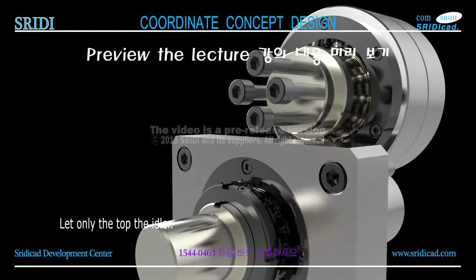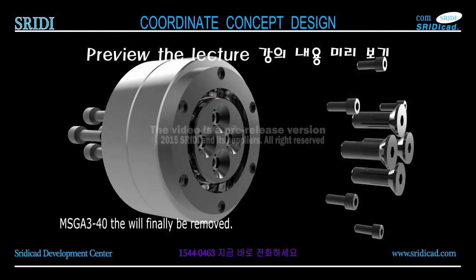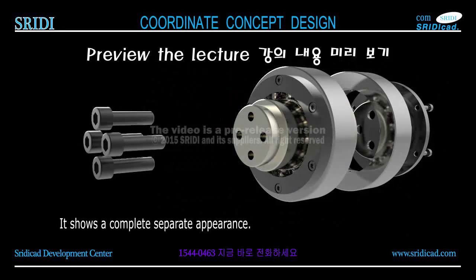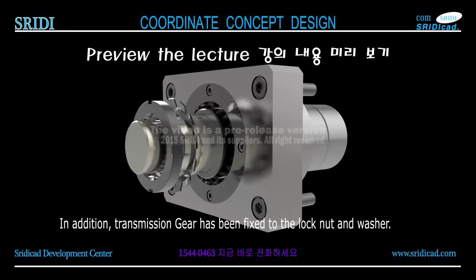The component shaft and MSGA 3-40 has been bolted. The MSGA 3-40 will finally be removed, showing a complete separated appearance. The power transmission gear has been fixed with a lock nut and washer. A key has been fixed for the spur gears and shaft. Now all sub-components are listed.